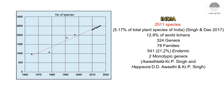Thereafter, there has been regular documentation of lichens being reported from India, and at present there are 2511 species of lichens as reported in Plant Discoveries, published by the Botanical Survey of India. These 2511 species are represented under 324 genera and 78 families, of which 541 are endemic to India — about 21.2 percent. We also have two monotypic genera: Avastiella and Hepsora. These 2511 species make 12.59 percent of the world's known lichens.